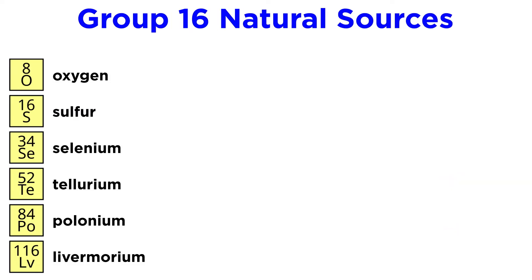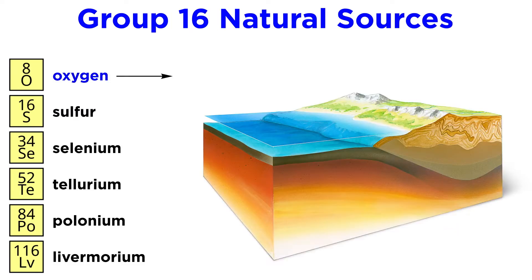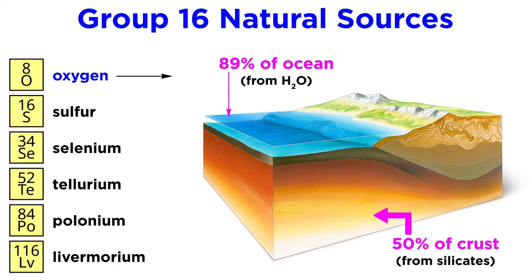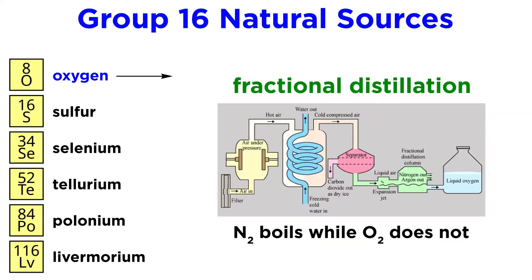So where can we find these elements? Oxygen is no problem, being that it is the most abundant element in Earth's crust at about 50% by mass. It also makes up 89% of all the oceans by mass. Additionally, the atmosphere is 21% molecular oxygen.